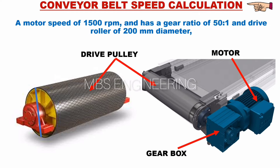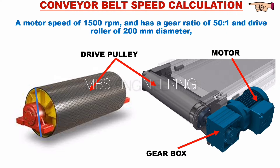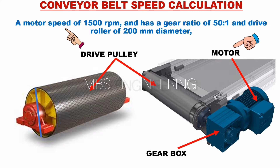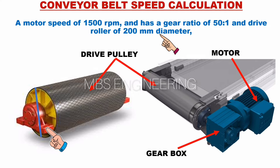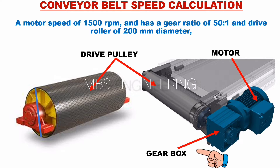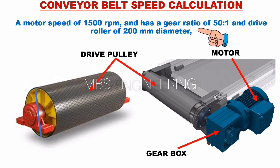We will now take a look at how to calculate the conveyor belt speed with a specific scenario. To do this, we need the following data: motor speed, gear ratio, and roller diameter. You can refer to the snaps of the drive pulley, gearbox arrangement, and driving motor arrangement. For example, a motor speed of 1500 revolutions per minute, a gear ratio of 50 to 1, and a drive roller of 200 millimeters diameter.